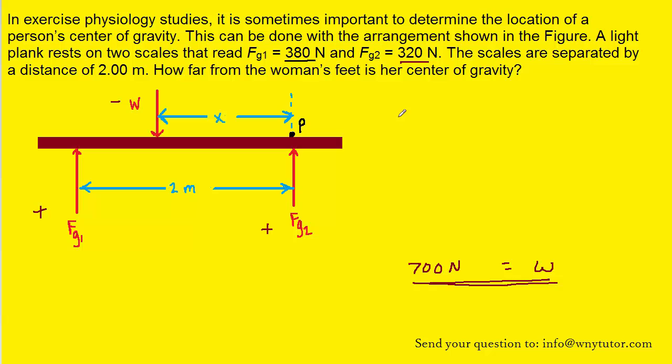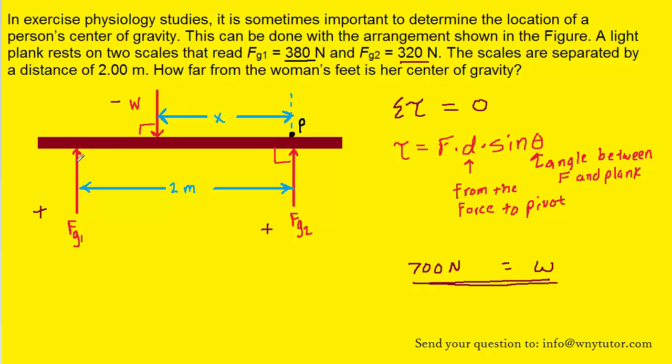Now since we know the plank is in equilibrium, that also means that the sum of the torques is going to equal zero. We'll recall that torque is equal to a force multiplied by a distance and then multiplied by the sine of an angle. Now the distance is going to be the distance from the force to a pivot point. And then the angle will be the angle between the force and the object. We'll notice that the angles between the forces and the plank are all 90 degrees because the forces are acting perpendicular to the plank.